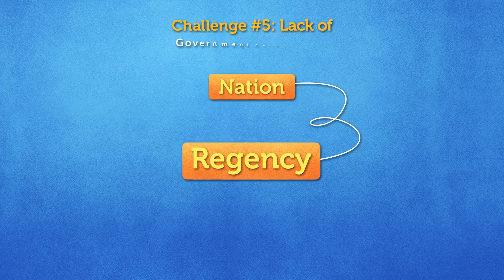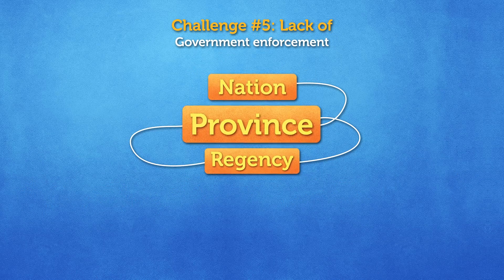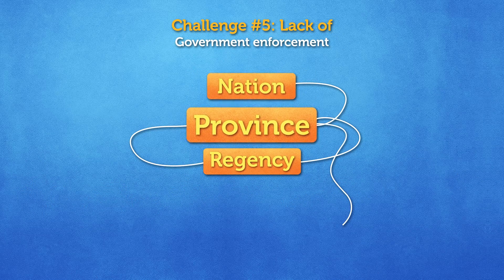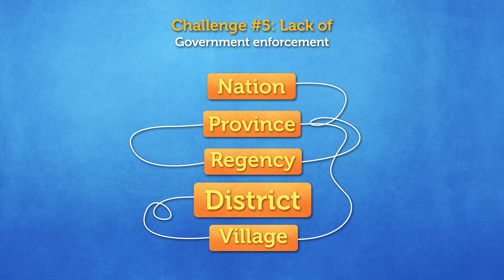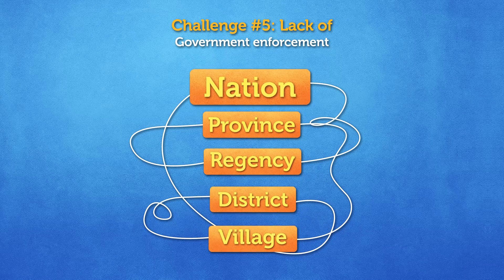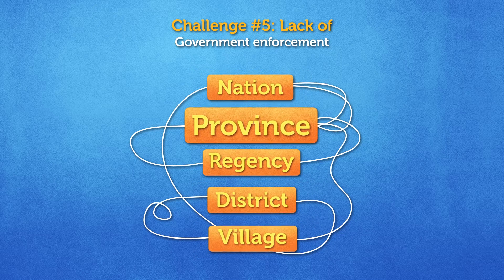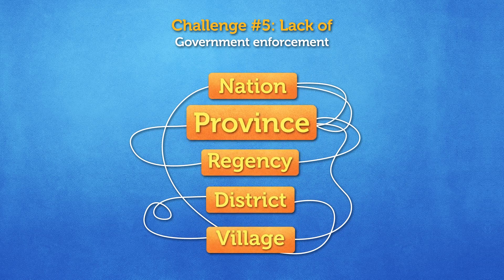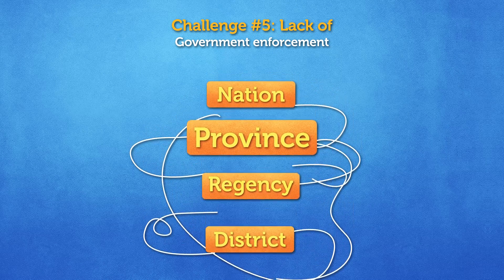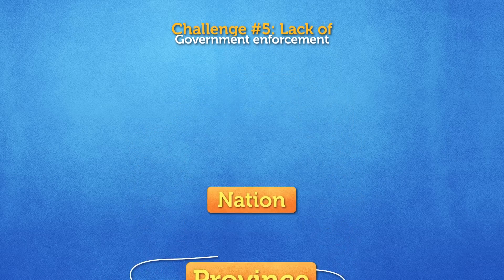Challenge 5: Lack of government enforcement starts because the Indonesian government is divided into five levels, and a lack of communication and cooperation results in poor law enforcement and sometimes corruption.